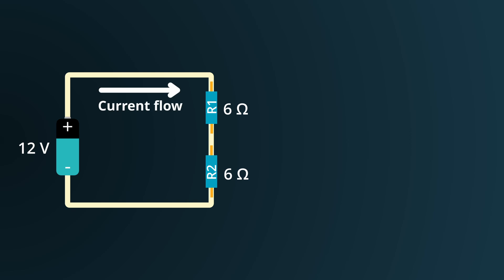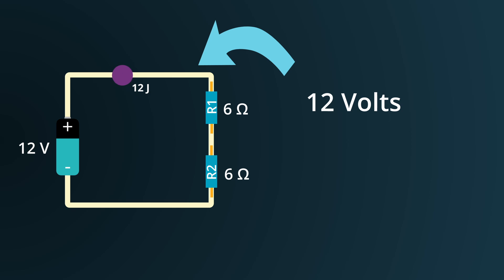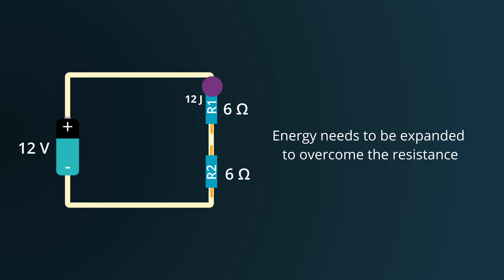To visualize this, we can imagine each charge leaving the battery carrying 12 joules of energy. Another way to say this is that the voltage at this point is 12 volts. Now, as the flowing charge encounters the first resistor R1, it faces a resistance. Some energy needs to be expended per unit charge to overcome this resistance and move through the resistor. This is usually referred to as a voltage drop across the resistor.